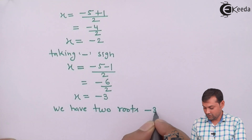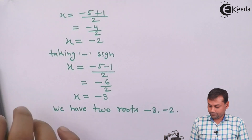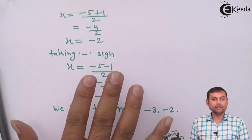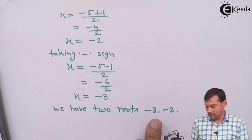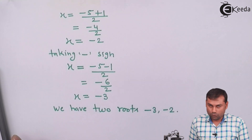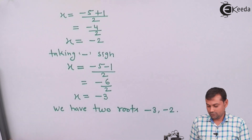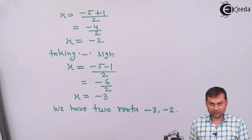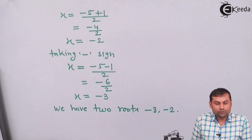So the two roots are −3 and −2. I hope you guys understood the concept. Thank you.